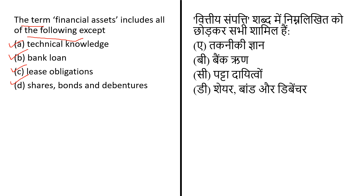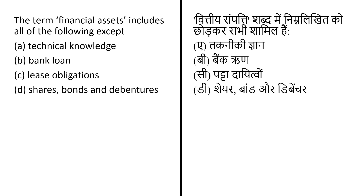A financial asset is a non-physical asset whose value is derived from a contractual claim, such as bank deposits, bonds, and participation in company share capital. Financial assets are usually more liquid than tangible assets such as commodities or real estate. So the correct answer is option A — the term 'financial asset' includes all of the following except technical knowledge.